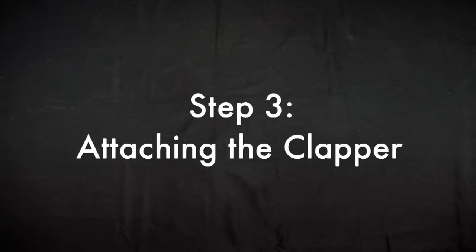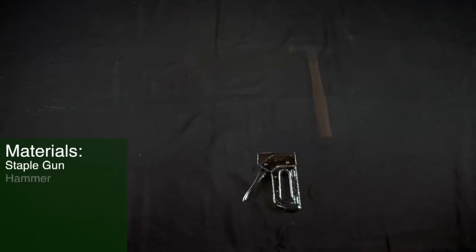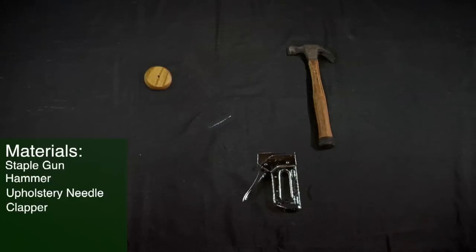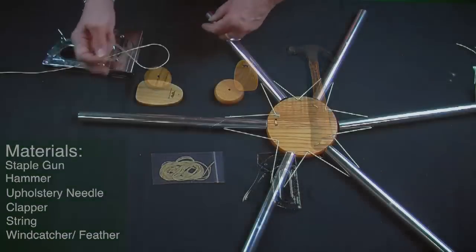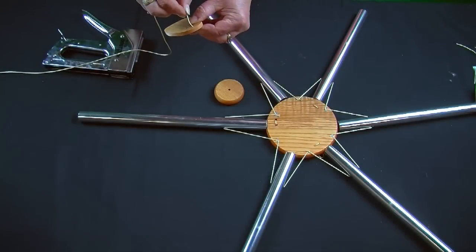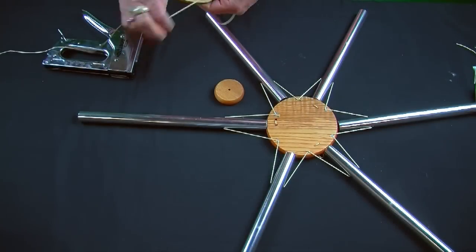You're almost done! Now we need to attach the center unit. For this step we will be using the staple gun, hammer, upholstery needle, the clapper that's the part that hits the tubes. You will also need more string and the wind catcher. Feed your string through the top of the feather through the hole on the side.